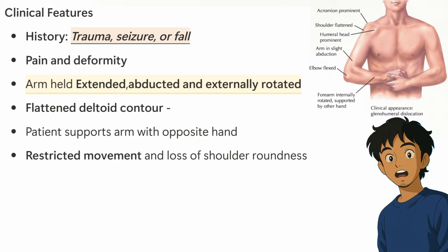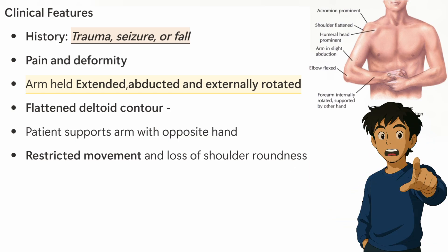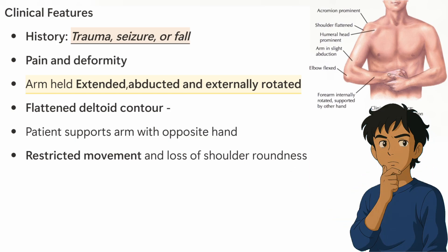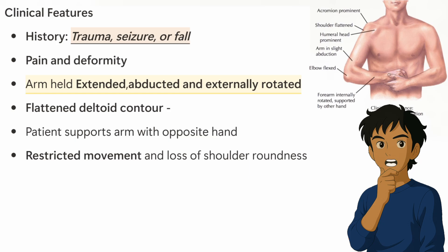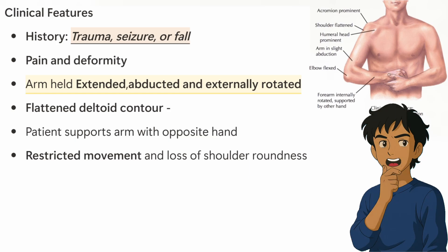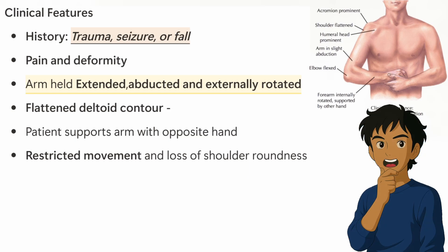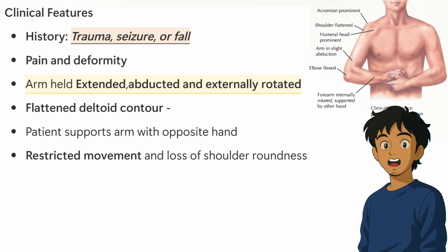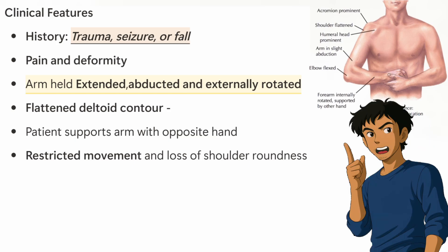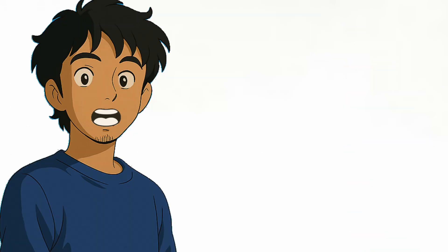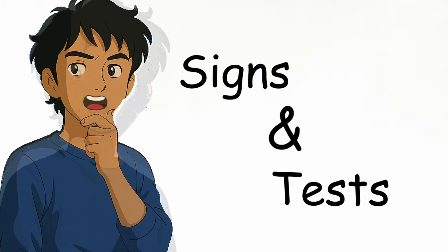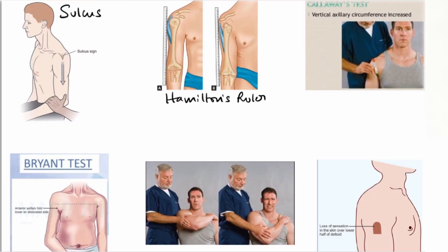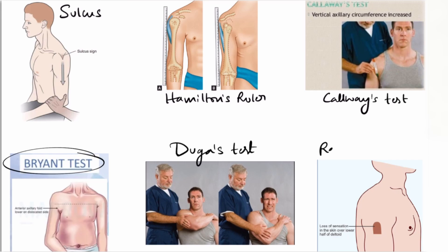The clinical features of shoulder dislocation include pain and deformity. The patient's arm will be extended, abducted, and externally rotated. Other features include flattened deltoid contour, patient supporting the arm with the opposite hand, restricted movement, and loss of shoulder roundness. Signs include sulcus sign, Hamilton's ruler test, Calve's test, Bryant's sign, Dugas test, and Rowe's test.